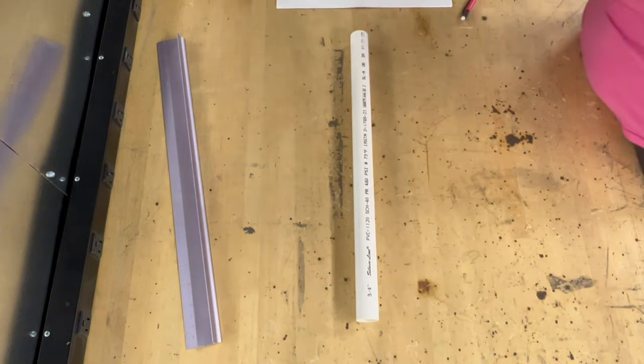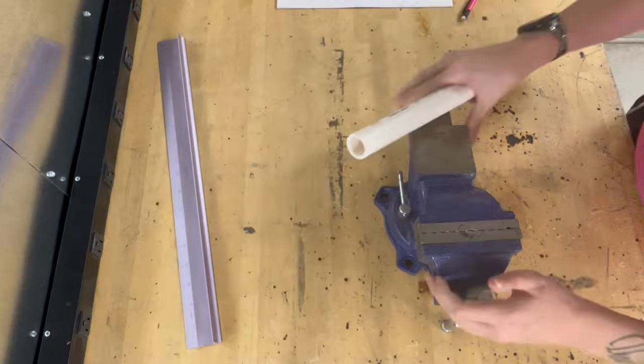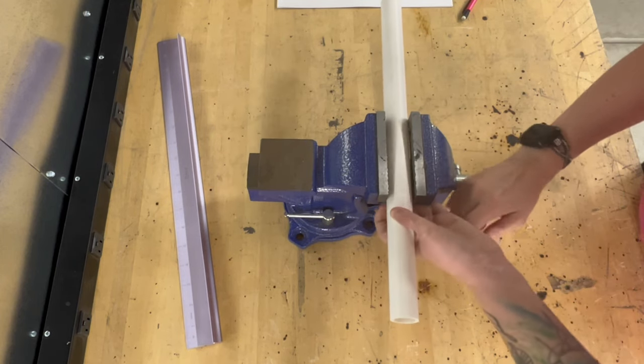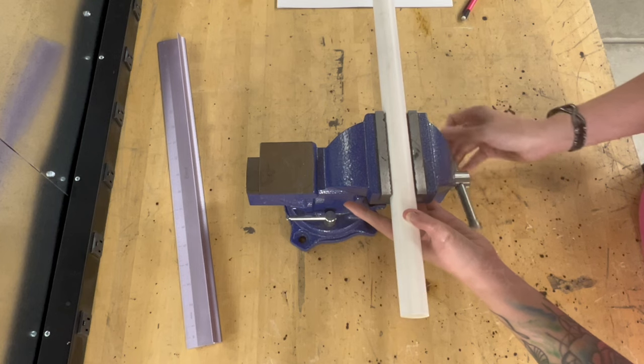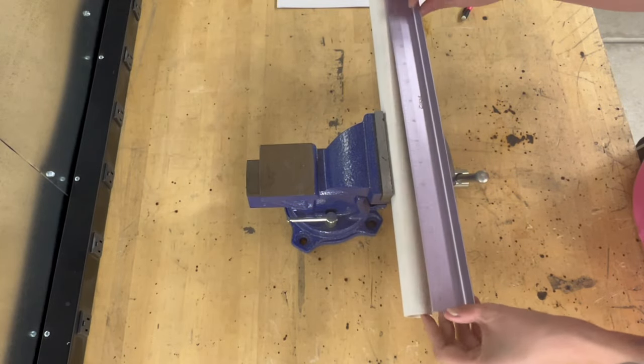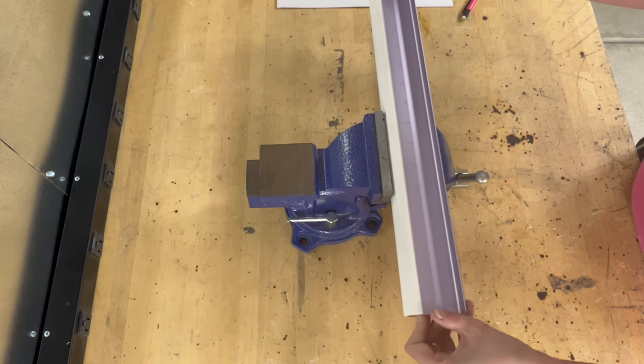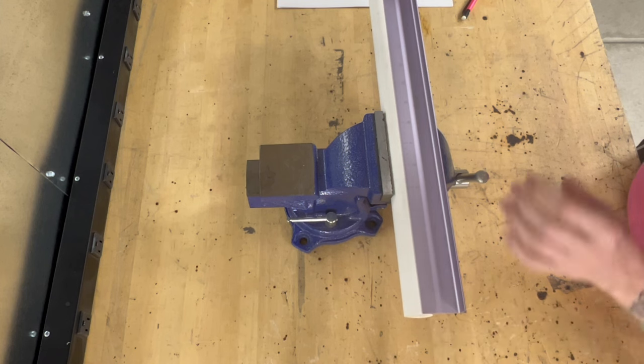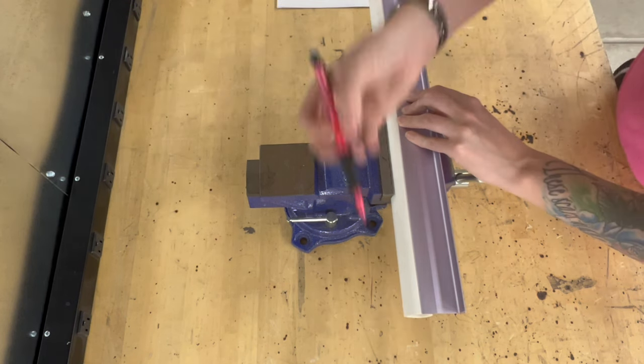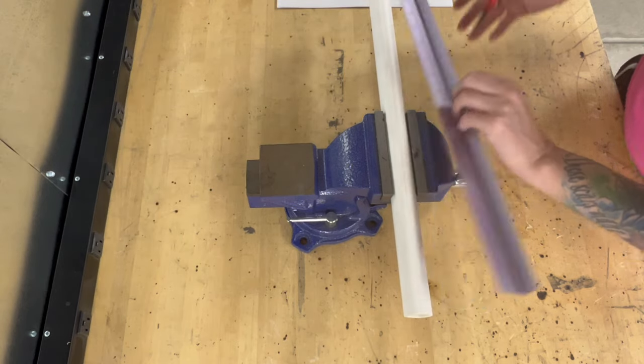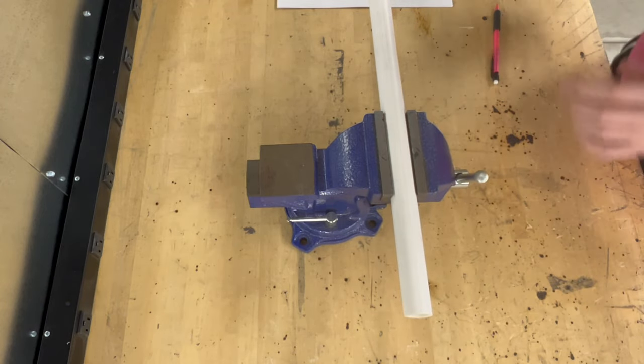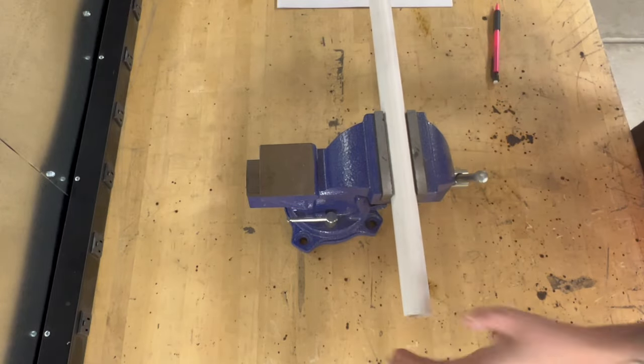What I found was easiest was to get our vise here and open it up, put our tubing in here and tighten it down just a little bit. It doesn't have to be super tight, just enough to kind of hold it. Then try your best to find middle and mark a line down the entire middle of it, just to give you a reference of where your holes need to be and just to make sure that they're fairly straight.